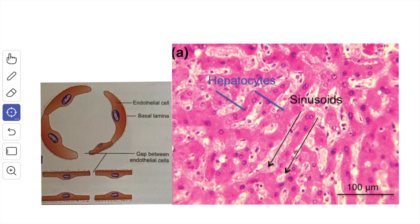Alternatively, the deficiency may be in the form of long slits, called discontinuous sinusoids, as in the spleen. At some places, the wall of the sinusoid consists of phagocytic cells instead of endothelial cells. The sinusoids have a broader lumen of about 20 micrometers than the capillaries. The lumen may be irregular, and because of this, blood flow through them is relatively sluggish.